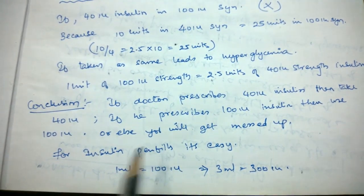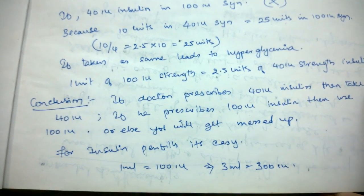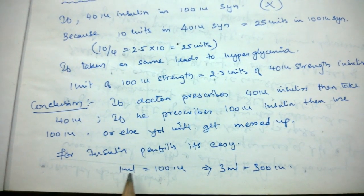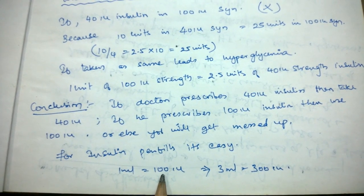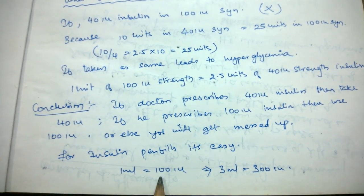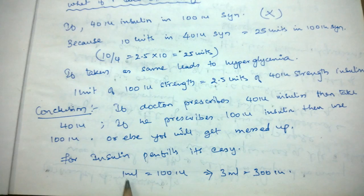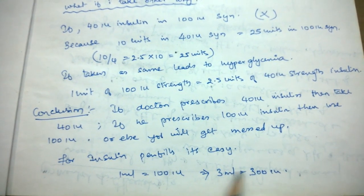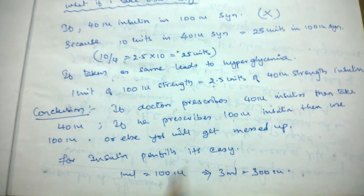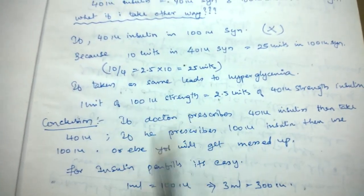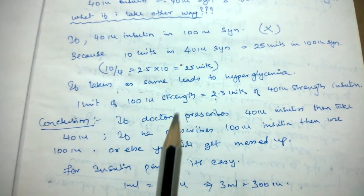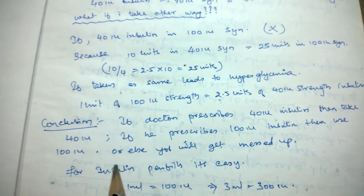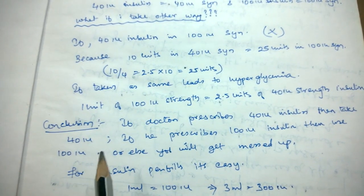When it comes to pen fills, it is much simpler: 1 ml of pen fill equals 100 international units of insulin. A 3 ml pen fill therefore contains 300 units, which is easy to calculate without the extra conversion steps needed for 10 ml bottles. When using 10 ml bottles, please be cautious to use the insulin strength and syringe type exactly as prescribed by the doctor.